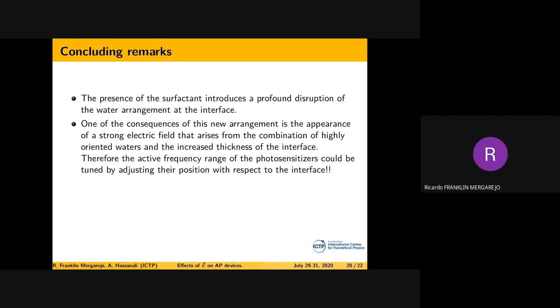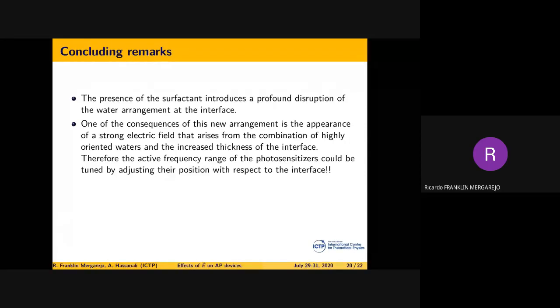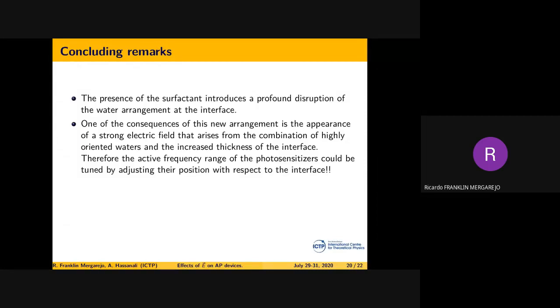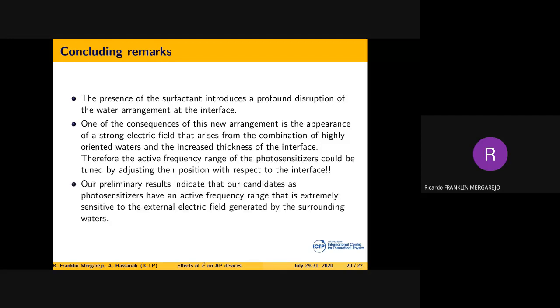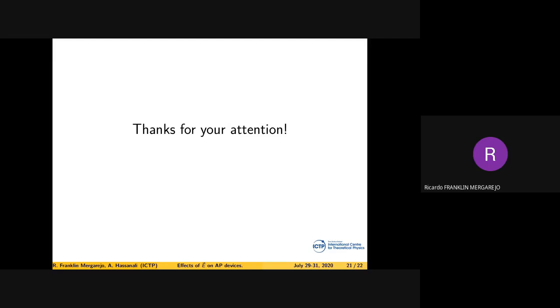This consequence of this arrangement leads to the rise of a strong electric field on the surface that goes even deeper into the bulk, like 20 angstroms. Getting a photosynthesizer on the surface, you have to take into account this. Also, the presence of this electric field should lead us to choose a proper photosynthesizer in order to put it there properly. So far, this is it. Thank you for your attention. If I have time, I could take some questions.